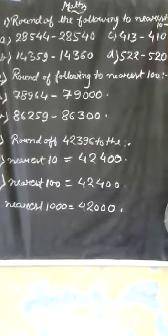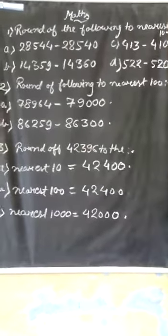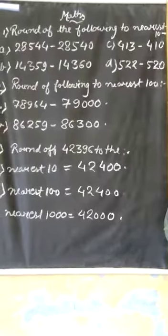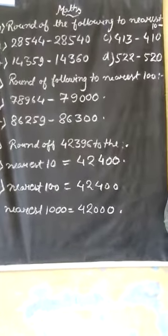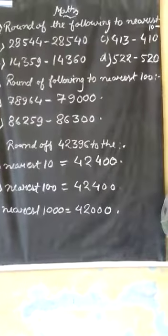Question number C, 413. At ones place it will be 3, which is less than 5, so we can write it as 410.